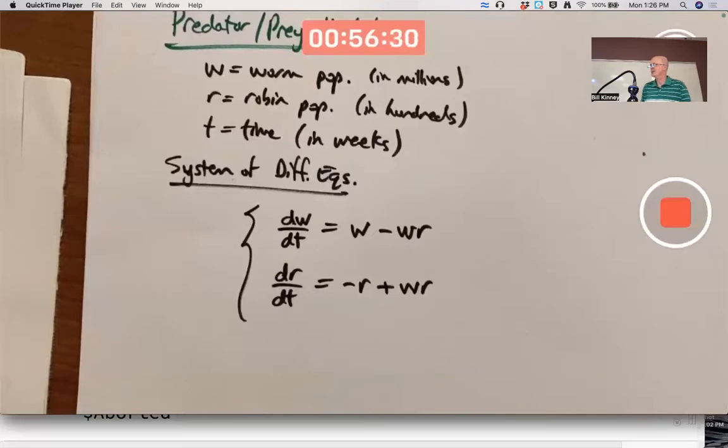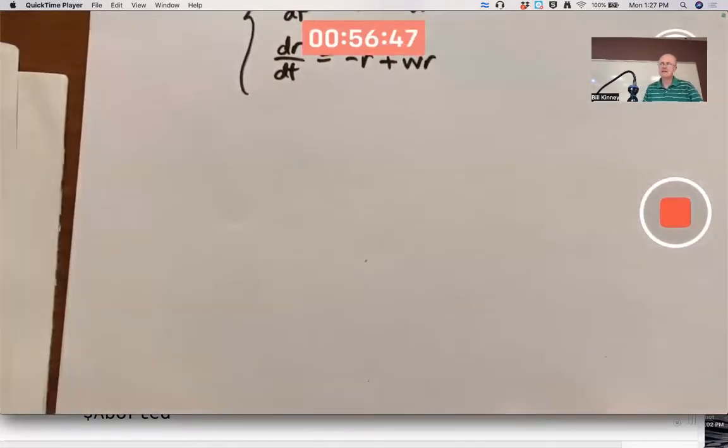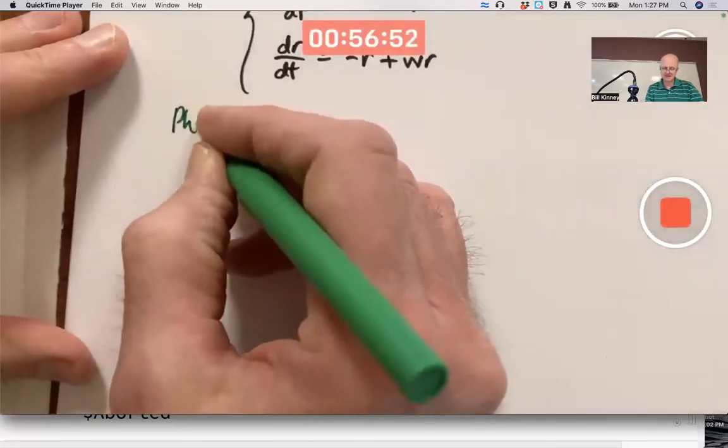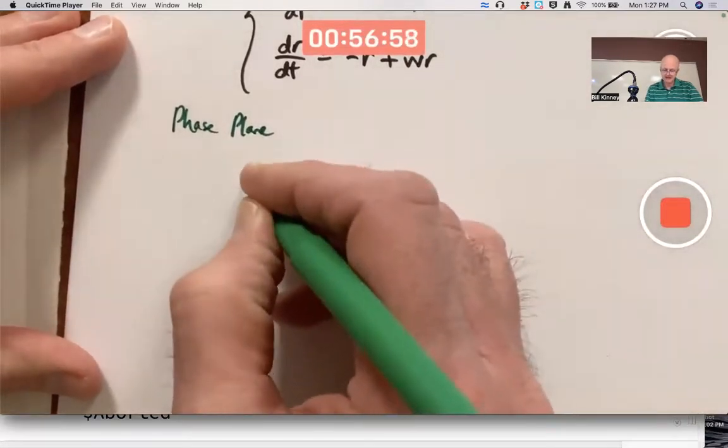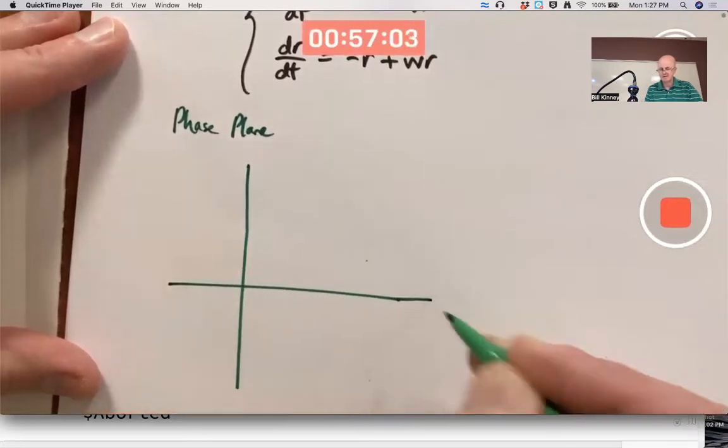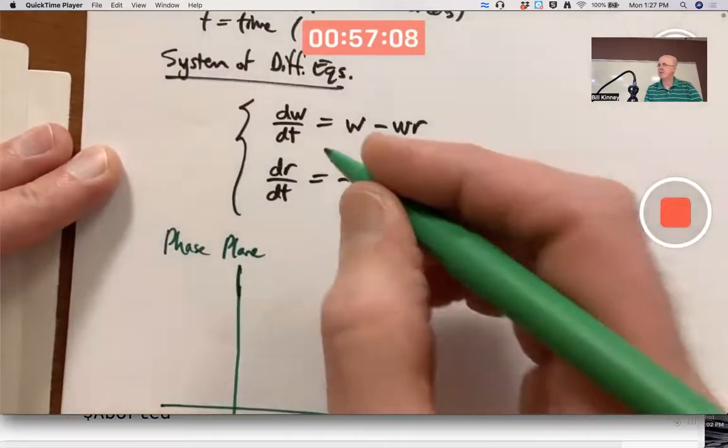So what do we do? We take a qualitative approach. We just try to think about it carefully using some special methods to help us draw graphs of solutions. We draw those graphs in something called a phase plane. It is a plane, and you label the axes with the dependent variable names, W and R, not T.